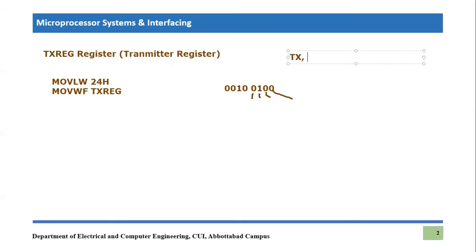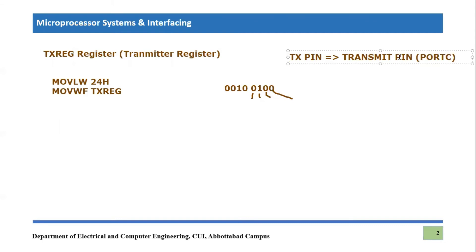That pin is dedicated in Port C and is basically the transmit pin — the TX pin. TX pin is known as the transmit pin. It serves as the transmit pin and is present in Port C. So if we want to transmit any 8-bit value, we place it in the transmit register and then automatically that value will be transmitted using the TX pin, which is present in Port C.